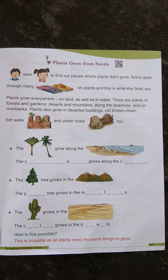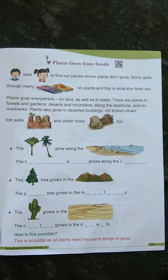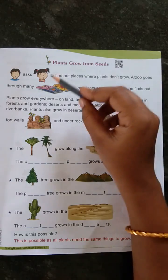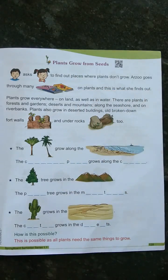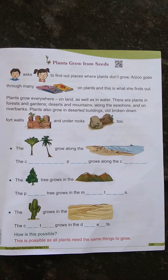See here — plants grow everywhere. Arman asks Arju to find out places where plants don't grow. Arju goes through many books on plants and finds out that plants grow everywhere — on land as well as in water.